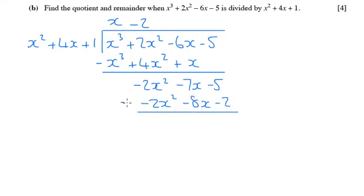And again take that off and see what we've got left. Now just be careful with all your minuses here. -7x minus -8x is positive x. And -5 minus -2 is -3.